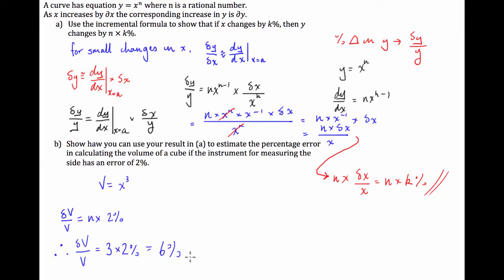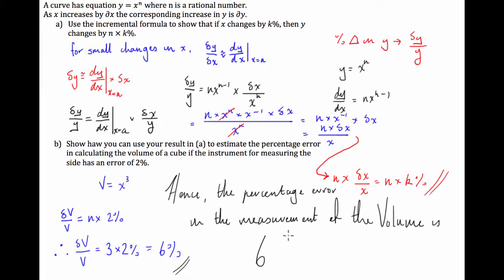So from there, if you want to sort of ensure that your teacher understands that you have fully worked out the question you can say, hence the percentage error in the measurement of the volume is 6% full stop.